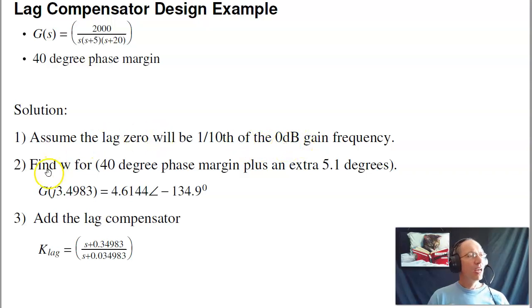Next, I find the frequency that gives you a 45 degree phase margin. The reason being is I want a 40 degree phase margin, and then I designed for an extra 5.1 degrees. That'll be due to the lag compensator. Give me a 45 degree phase margin. So you search the j omega axis until I find out what frequency has a phase shift that's 45 degrees away from 180, or minus 134.9. Turns out that frequency is 3.49 radians per second.